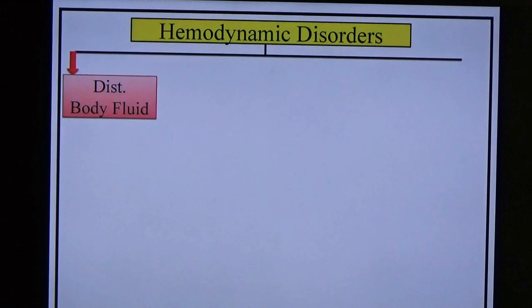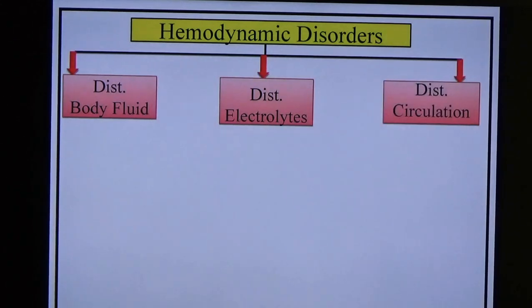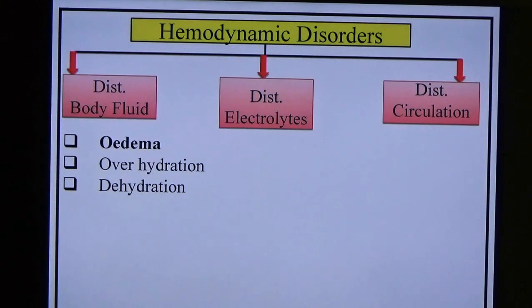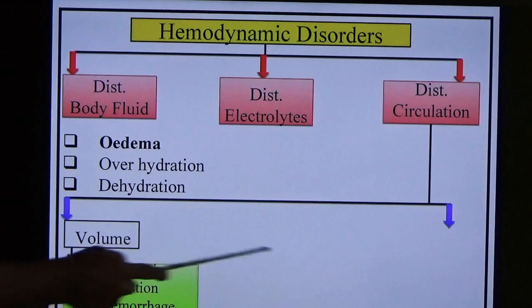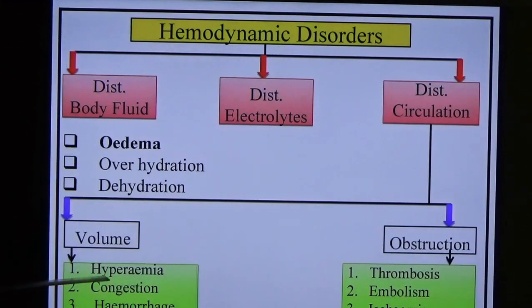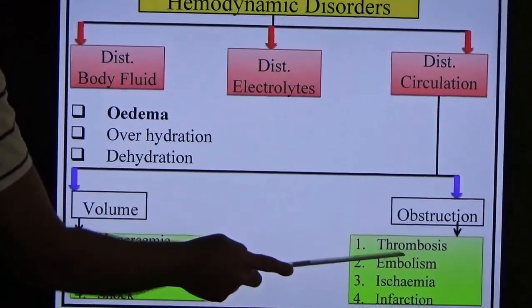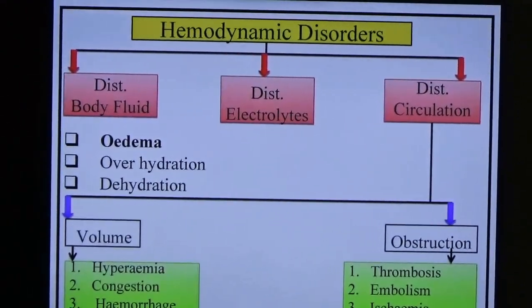The classification of haemodynamic disorders is based on three parts: disturbance of body fluids (edema, overhydration, dehydration), disturbance of electrolytes, and disturbance of circulation. Disturbance of circulation is divided into volume-related (hyperemia, congestion, hemorrhage, shock) and obstruction-related (thrombosis, embolism, ischemia, and infarctions). Today we will cover the topic of edema.